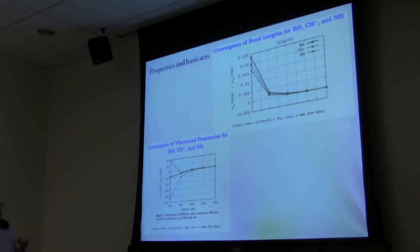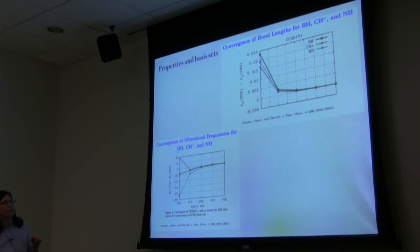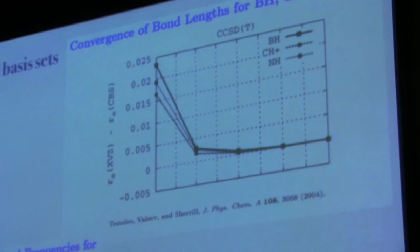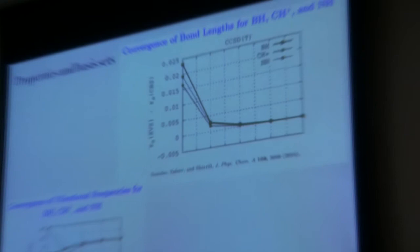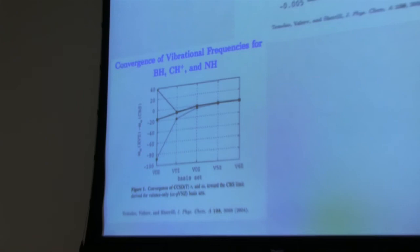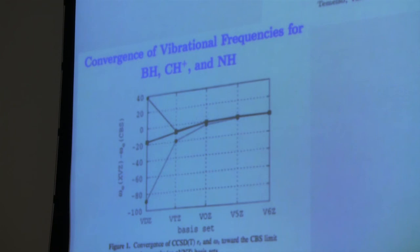How do basis sets actually perform? Here are graphs of frequencies and bond lengths for small molecules at double-, triple-, and quadruple-zeta, looking at error — you'd like all values to converge to zero. Things start to converge around triple-zeta, but double-zeta is not so good. Everything becomes much nicer at triple-zeta. Bond lengths get quite close at triple-zeta and are rather far off at double-zeta.